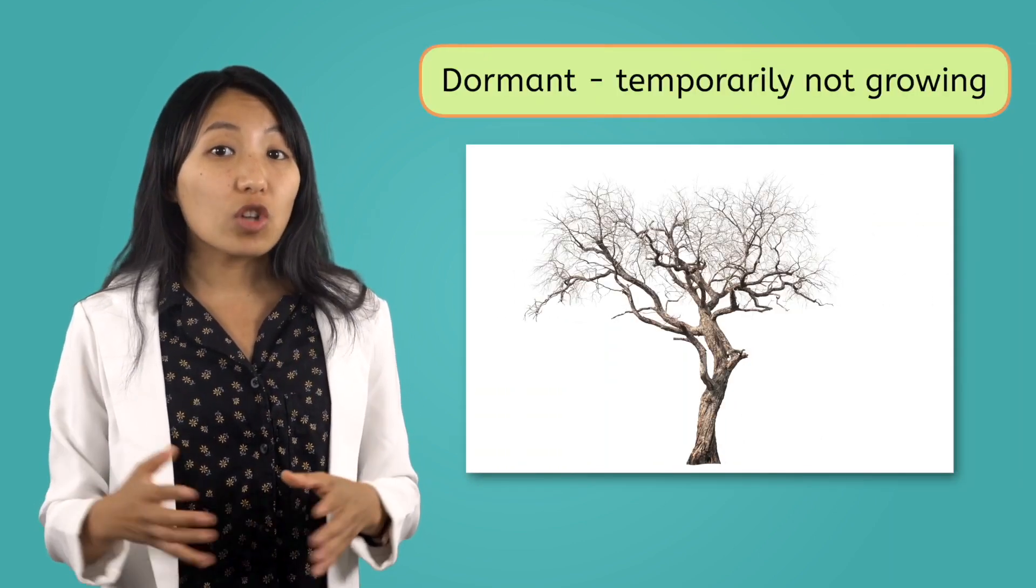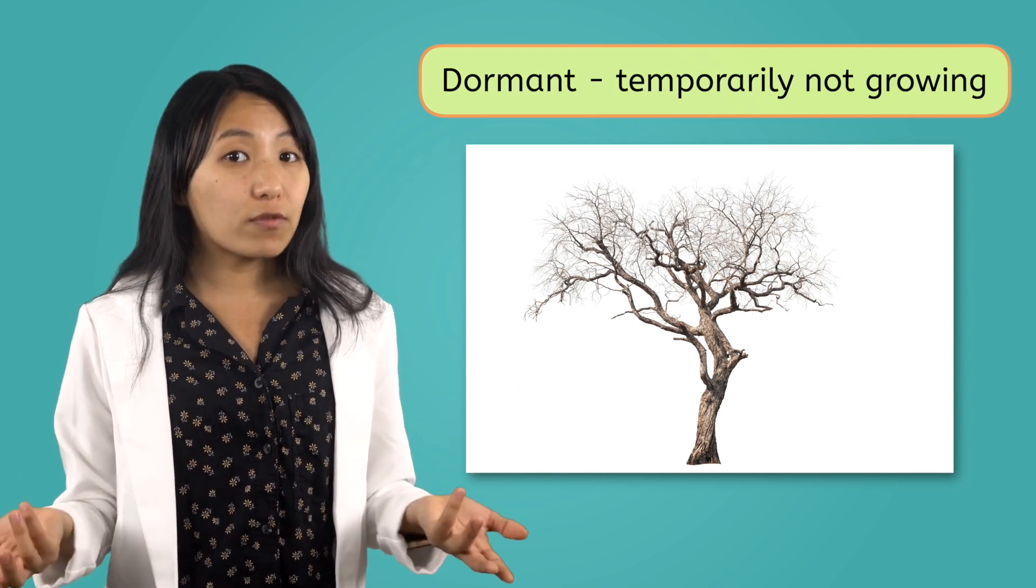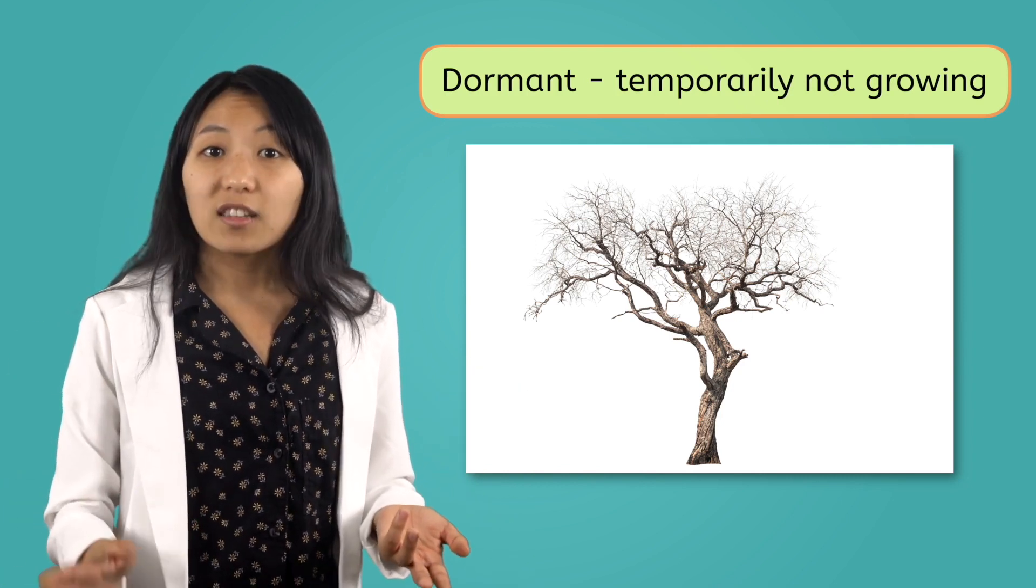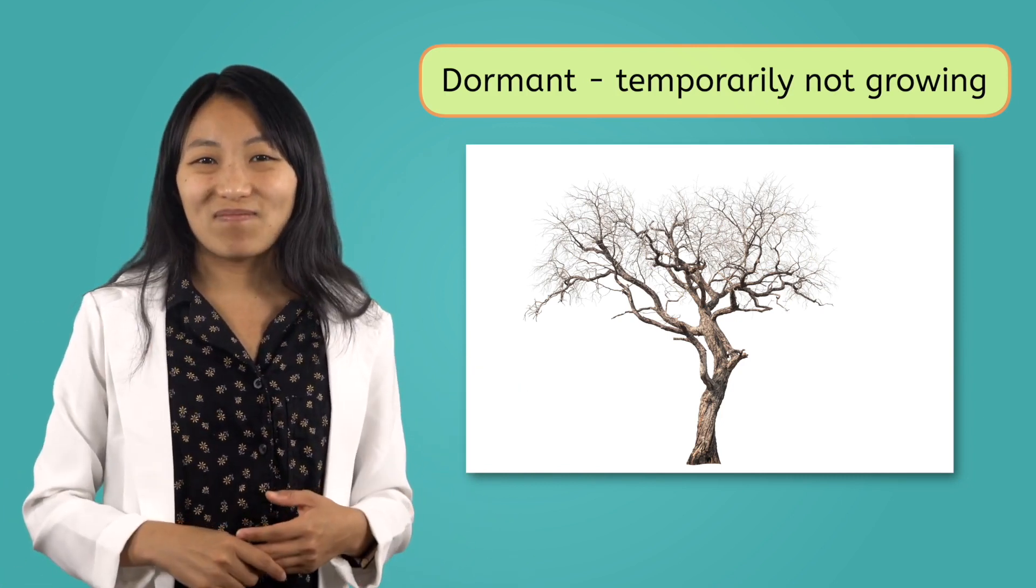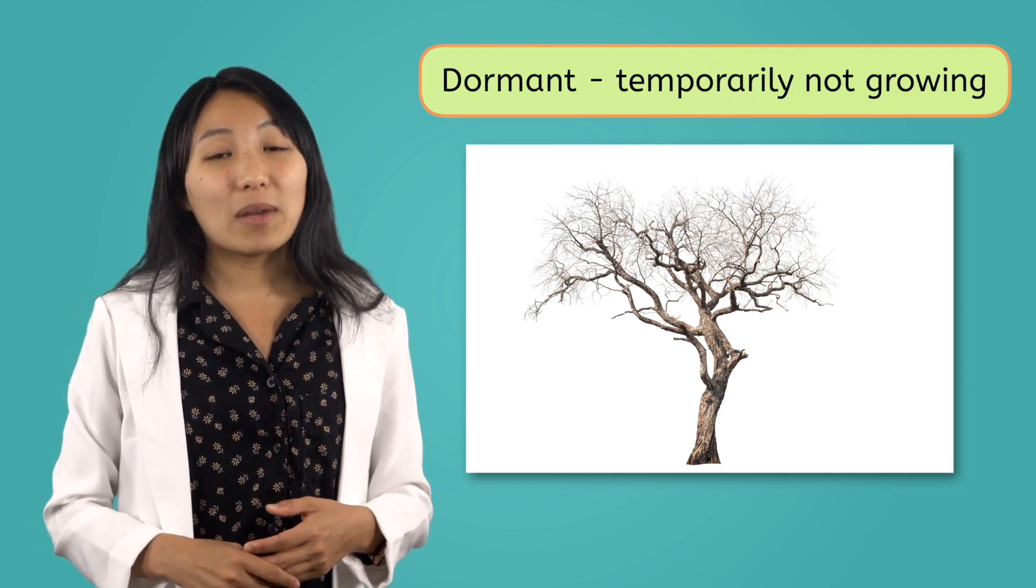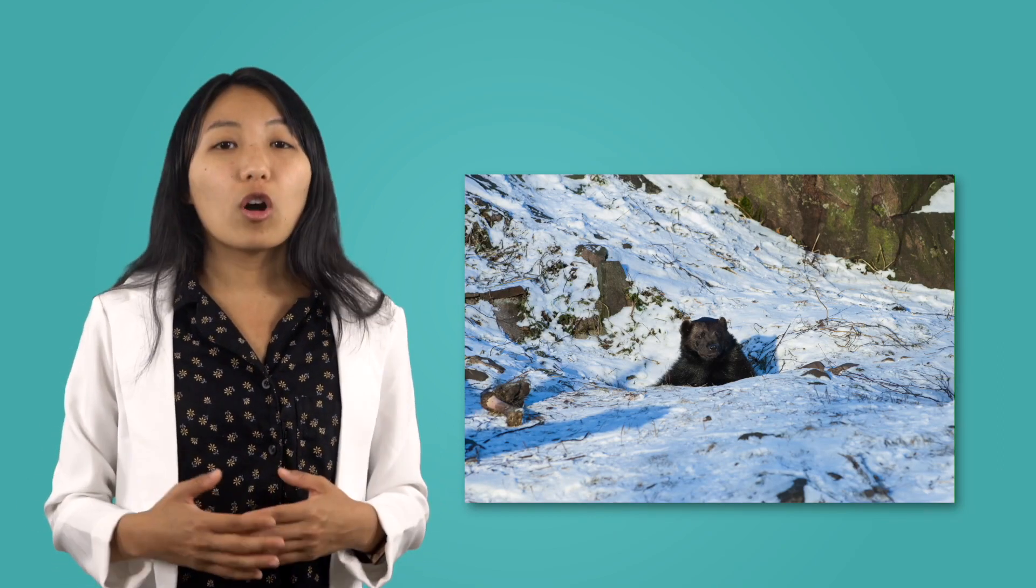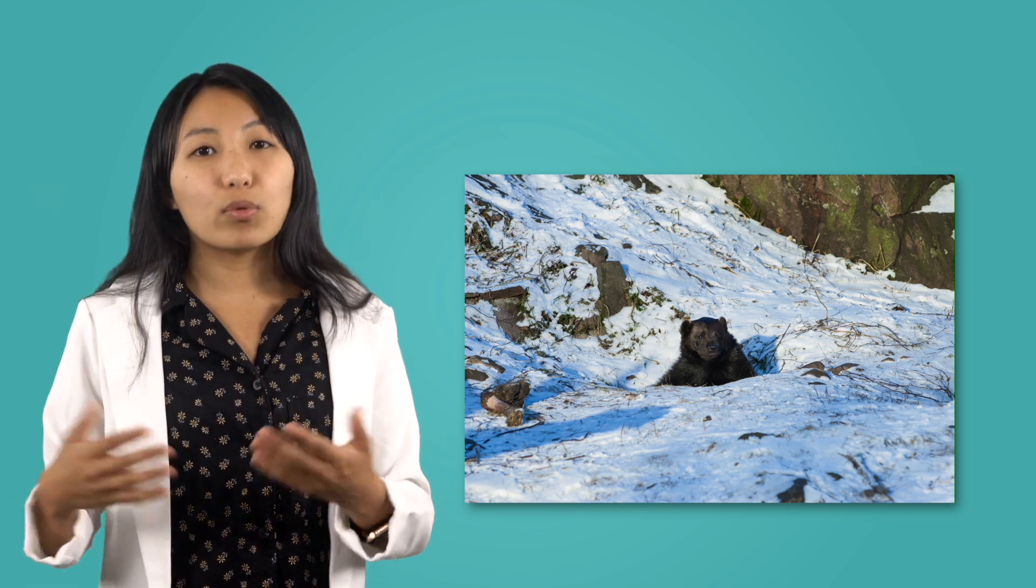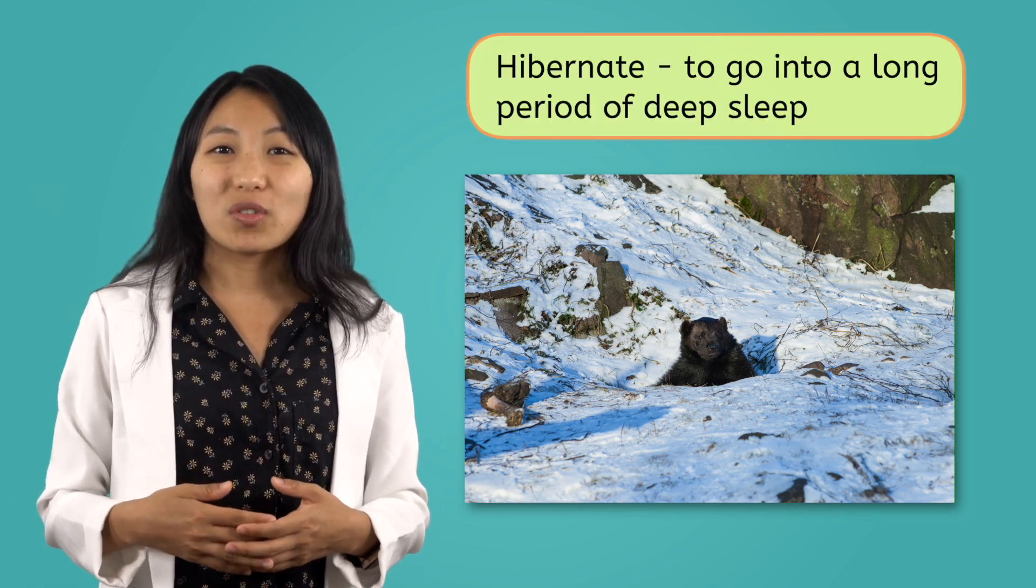Plants have a special kind of sleep they go into during the winter. When it gets really cold, many plants go dormant. That means they stop growing and their leaves might fall off, but they're not dead. They're just saving their energy. Similar to plants, some animals, like bears, go into a deep sleep or hibernate during the winter too.